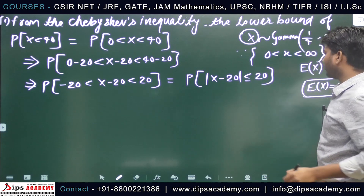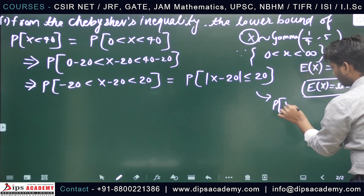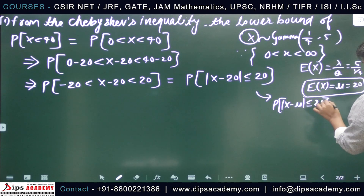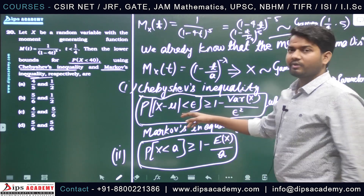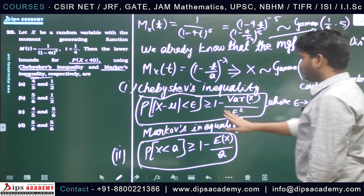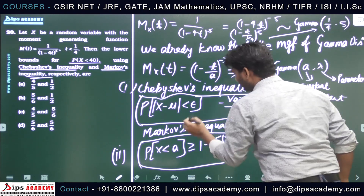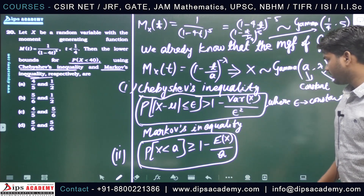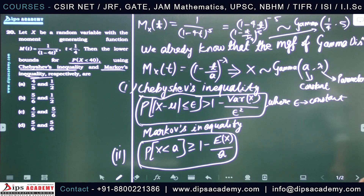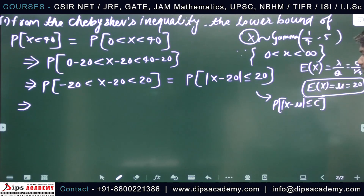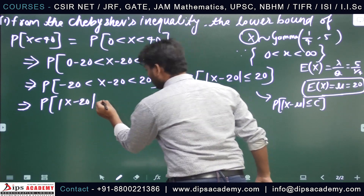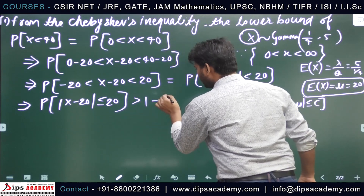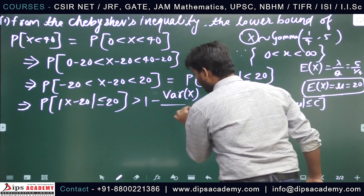This is in the form P(|x - μ| < ε) with μ = 20 and ε = 20, so we can directly apply Chebyshev's inequality. Therefore P(|x - 20| < 20) ≥ 1 - Var(x)/20².